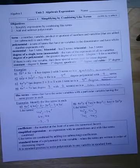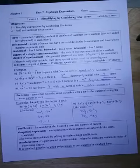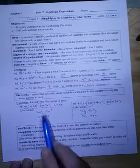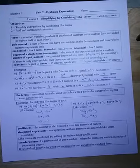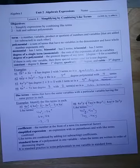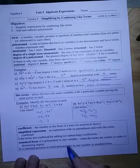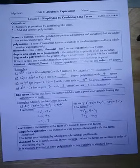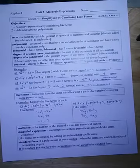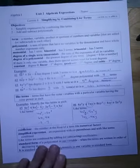A simplified expression has no parentheses and all like terms have been combined by adding or subtracting. For example, 4x² − 3x² combines to give 1x². We also want expressions in standard form — when there's at least one variable, we write terms in decreasing order of degree. For instance, degrees 2, 1, and 0 are written in that order.